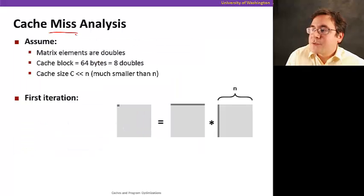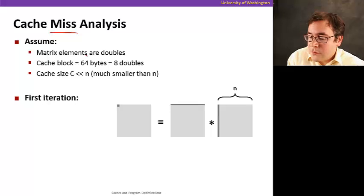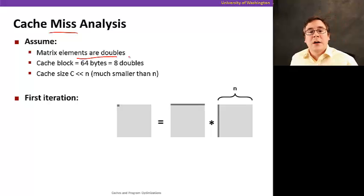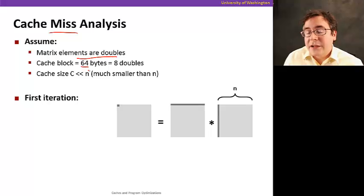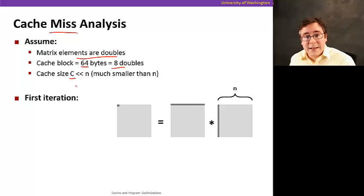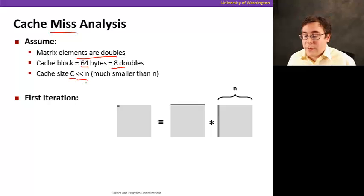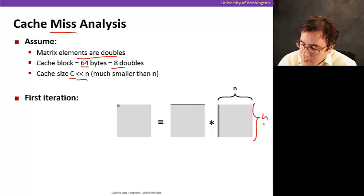Now let's do a cache miss analysis of this matrix multiplication. We're going to assume that matrix elements are doubles, so they take 8 bytes. If our cache block is 64 bytes, each cache block holds 8 doubles. Let's also say that our cache size C is much smaller than n, which is the dimension of our n-by-n matrix.